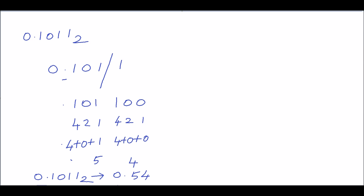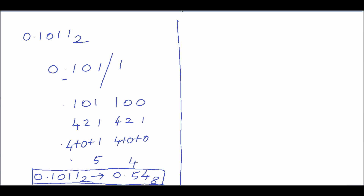So the binary number .1011₂ can be written as .54₈. Next, we will see another example with a combination of an integer portion and a fractional portion.